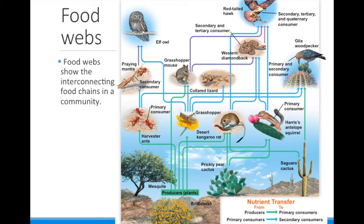Food chains don't really provide the most accurate picture of a real community. Many organisms have overlapping niches and use some of the same food resources. For example, the desert kangaroo rat and the Harris's antelope squirrel are both primary consumers that eat the prickly pear cactus, making them competitors. Notice that some animals fit into more than one trophic level — the elf owl is a secondary consumer because it eats the grasshopper, but also a tertiary consumer because it eats the praying mantis, which is a secondary consumer.